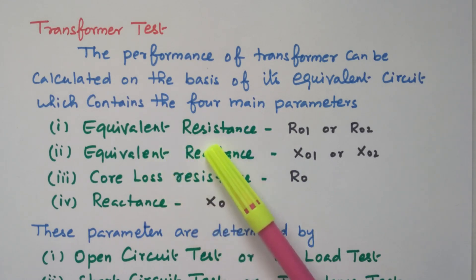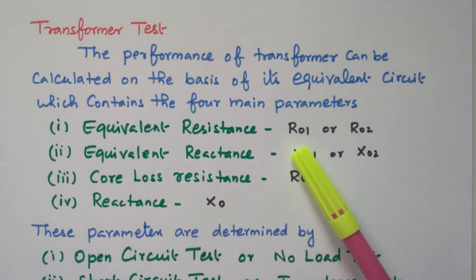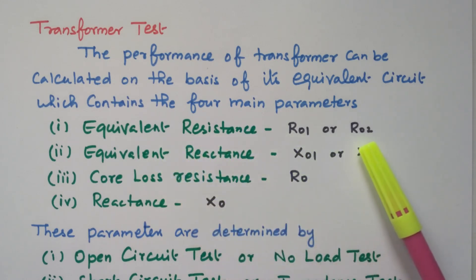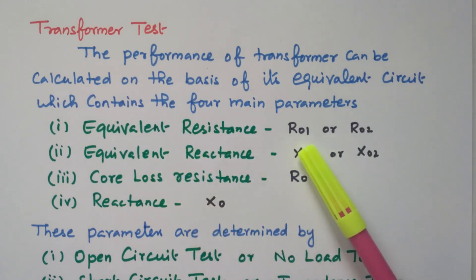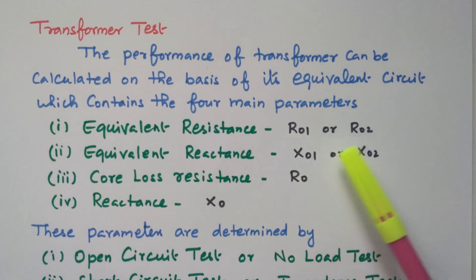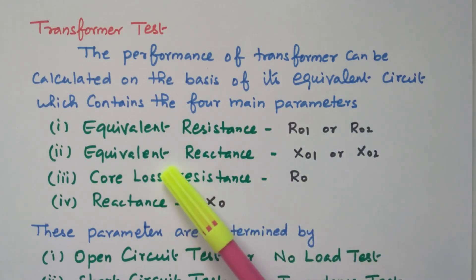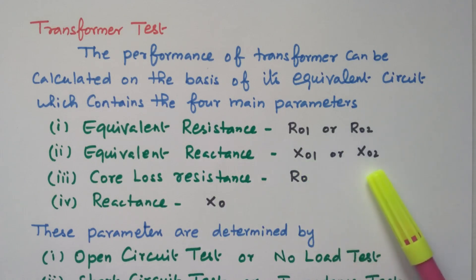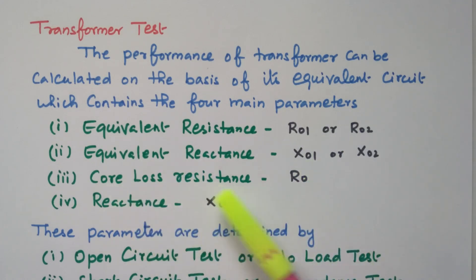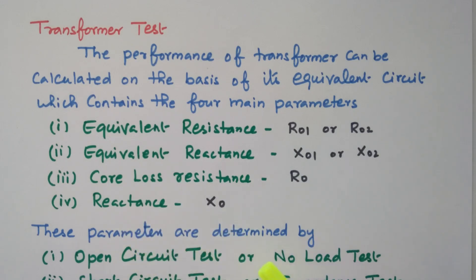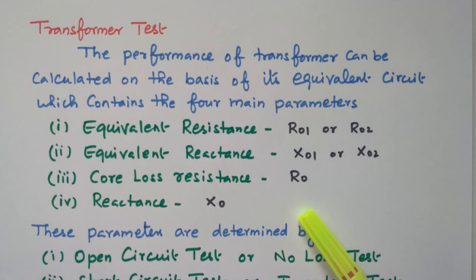The four parameters are: equivalent resistance R01 or R02 — R01 refers to the primary side, R02 to the secondary side — equivalent reactance X01 or X02, core loss resistance R0, and reactance X0. Using these four parameters, we can construct the equivalent circuit.